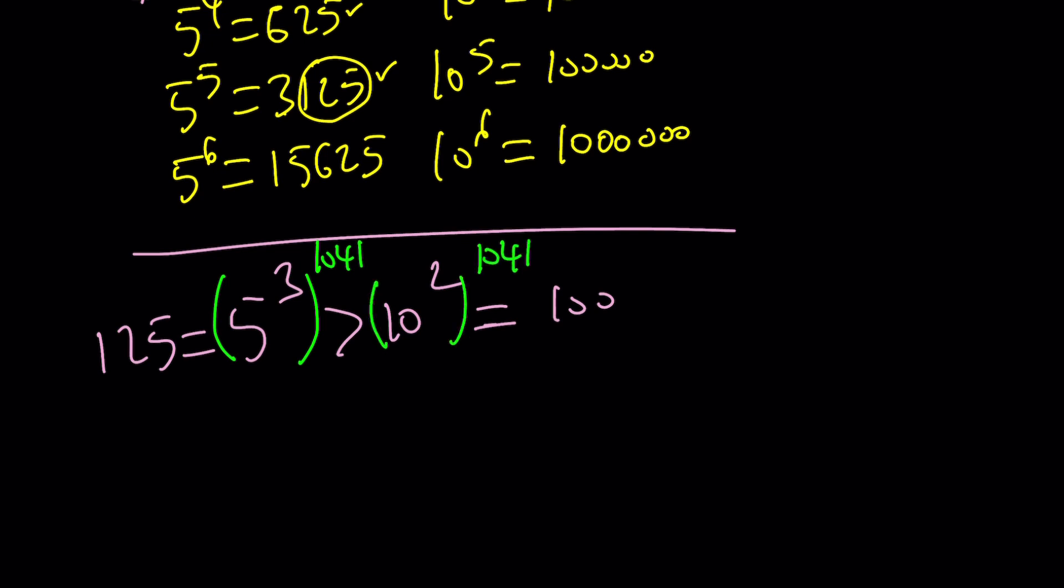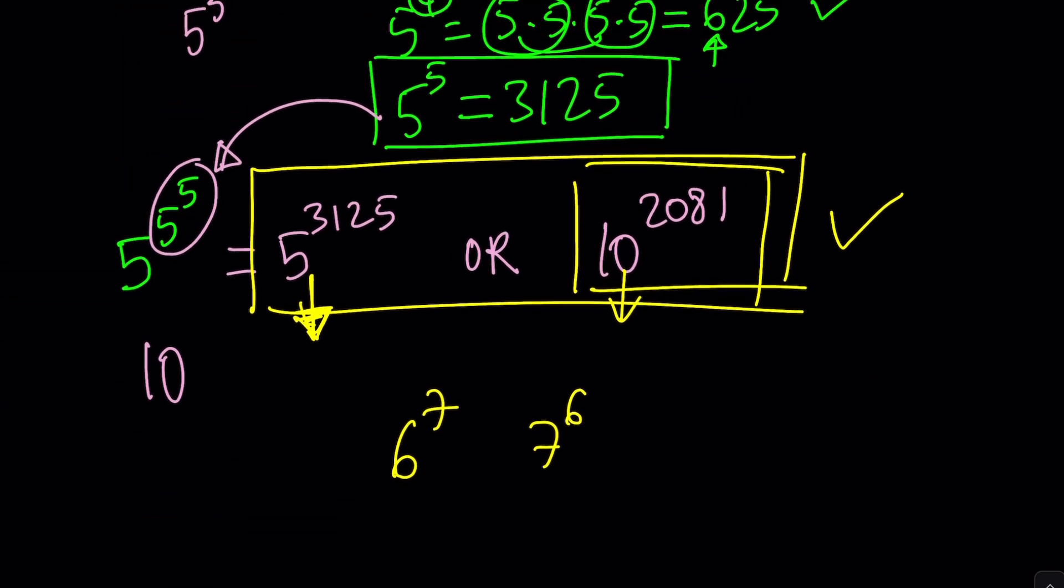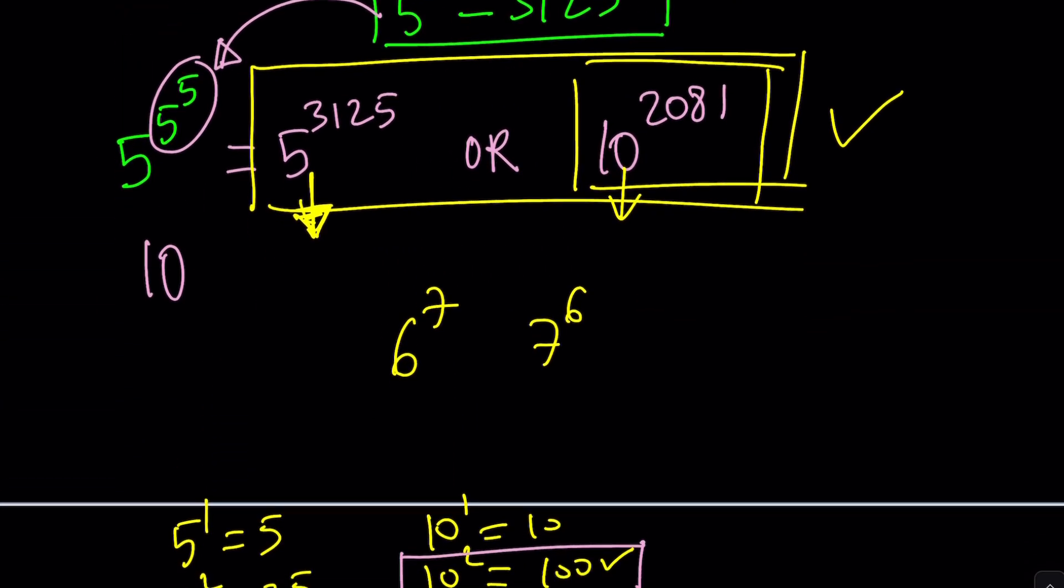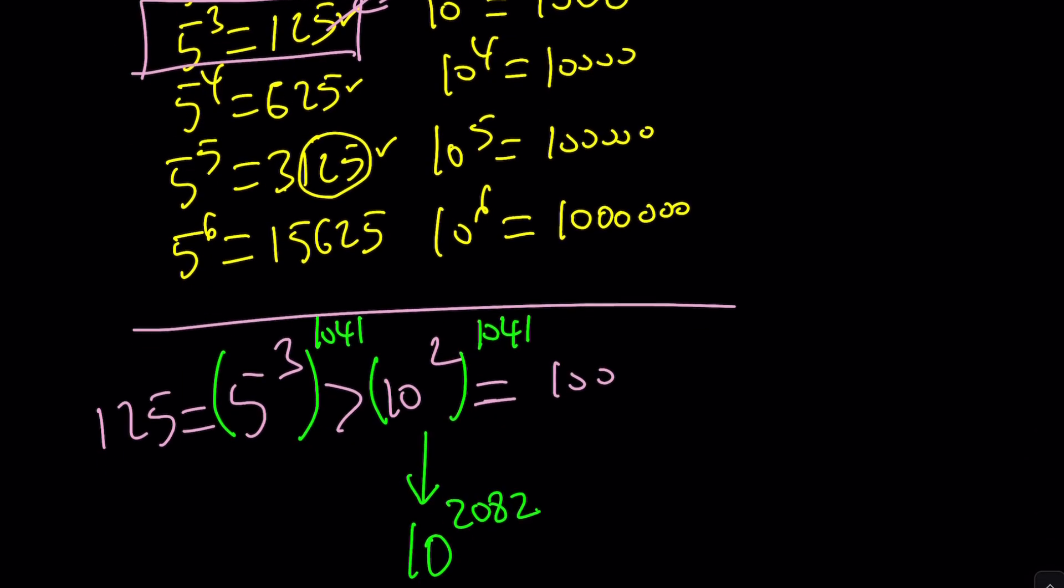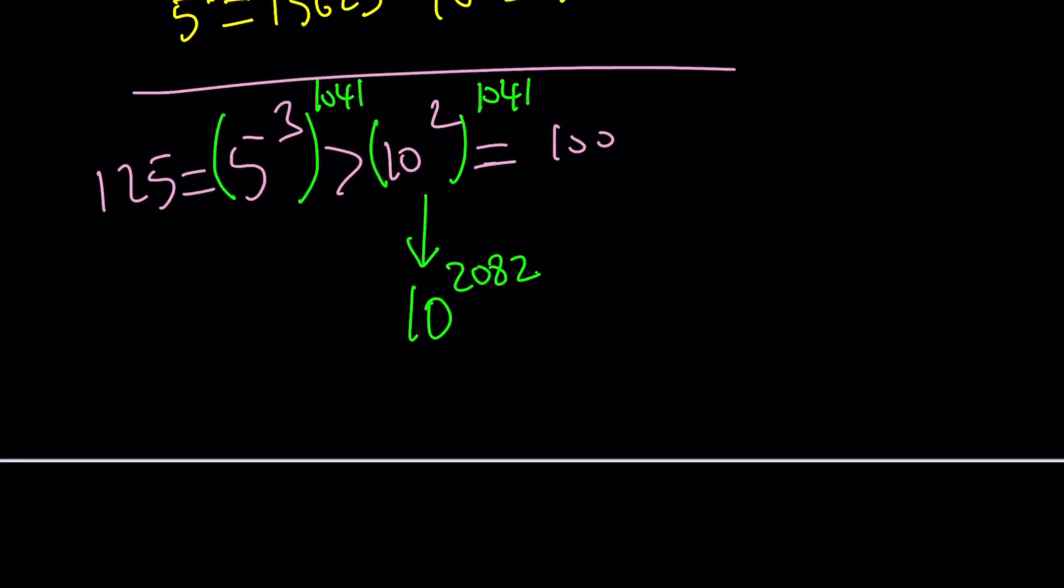Why? Because that'll give you, on the 10, it'll give you 10 to the power of 2082. But wait a minute, were we not trying to compare it to 10 to the power of 2081? Yes, but you can't get to it because that's an odd number and you have 10 squared. You get the idea? And then, of course, from the 5, we're going to get 5 to the power 3123. Interesting.